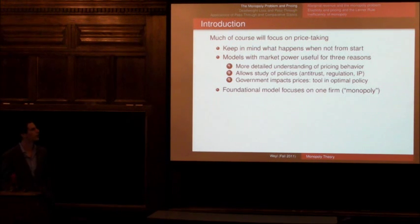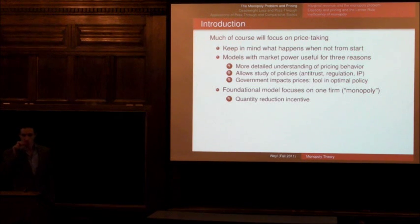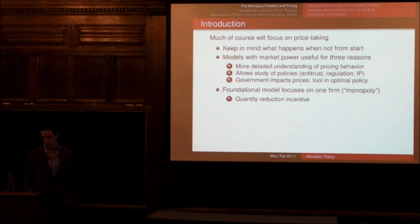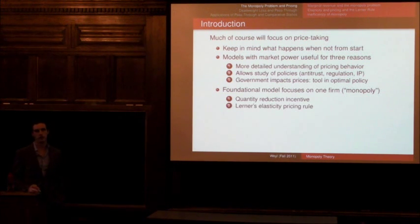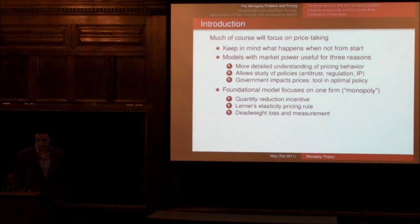The foundational model for analyzing situations with market power is a model with just one firm, usually called the monopoly model, and this is what I'm going to develop today. First, I'll talk about how control over a market — influence over price — gives an incentive for a monopolist to reduce quantity below what would be socially optimal, below the point where price equals marginal cost. I'll then quantify that using Lerner's classic elasticity pricing rule, and talk about the inefficiency caused by that distortion — the deadweight loss of monopoly — and how to measure it. I'll then talk about the comparative statics of monopoly.